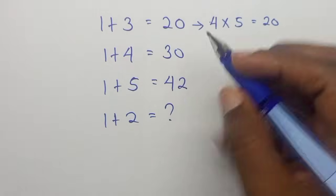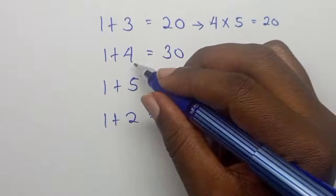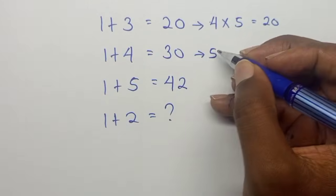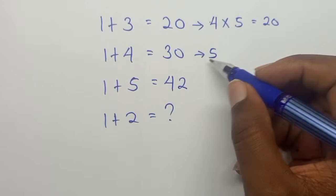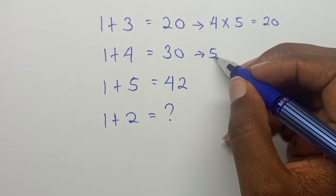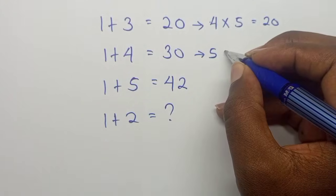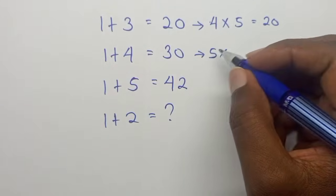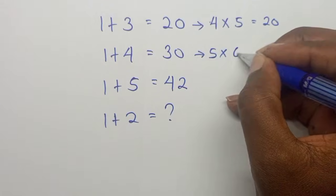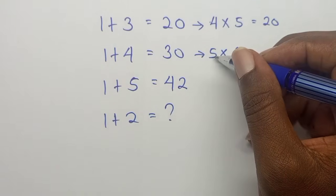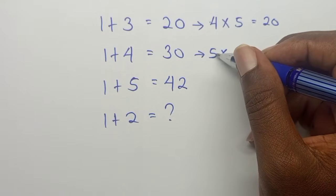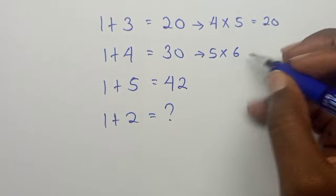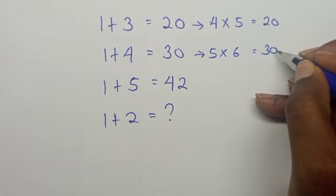For this next one, 1 plus 4 is actually 5. What did they do to the 5 to get 30? They multiplied 5 times its predecessor, which is 6. So 6 precedes or succeeds 5. So 5 times 6 equals 30.